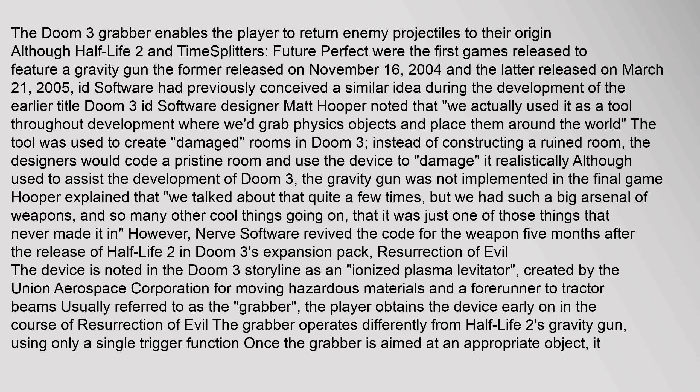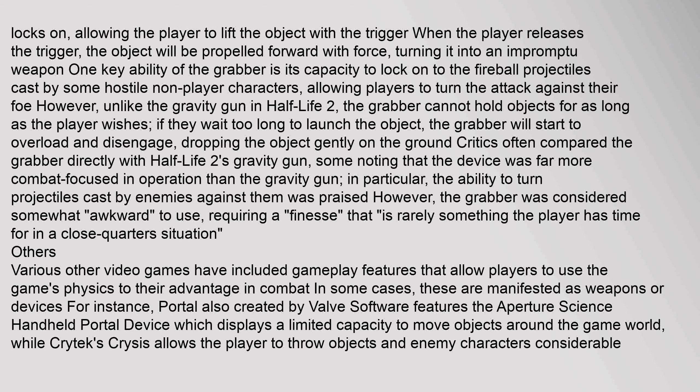However, Nerve Software revived the code for the weapon five months after the release of Half-Life 2, in Doom 3's expansion pack Resurrection of Evil. The device is noted in the Doom 3 storyline as an ionized plasma levitator created by the Union Aerospace Corporation for moving hazardous materials, and a forerunner to tractor beams. Usually referred to as the grabber, the player obtains the device early on in Resurrection of Evil. The grabber operates differently from Half-Life 2's gravity gun, using only a single trigger function: once aimed at an appropriate object, it locks on, allowing the player to lift the object. When the player releases the trigger, the object is propelled forward with force. One key ability is its capacity to lock onto fireball projectiles cast by hostile non-player characters, allowing players to turn the attack against their foe. Unlike the gravity gun in Half-Life 2, the grabber cannot hold objects indefinitely — if the player waits too long to launch the object, the grabber will start to overload and disengage, dropping the object gently on the ground.